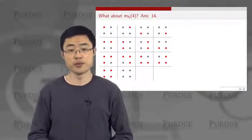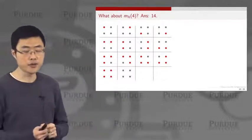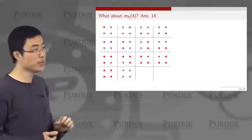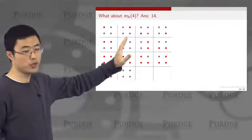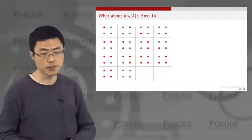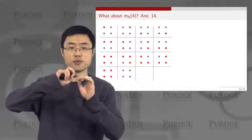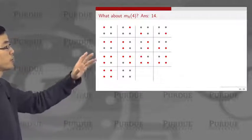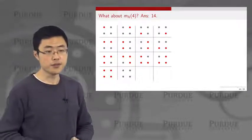How about the situation where we still have a 2D space, however we have n equals four — four data points? Now we can enumerate all the possible cases. This is actually the best you can ever construct by locating the four data points. You can put the four data points at the four corners of a square.